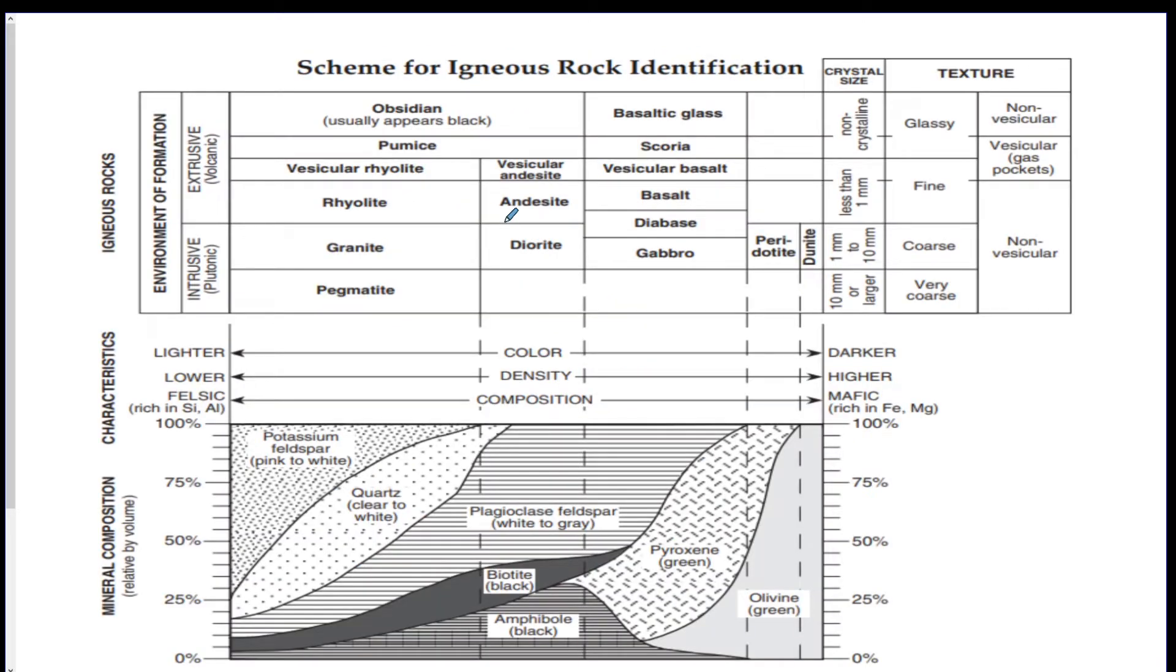The next chart is the igneous rock chart. There is a lot of information on this that you can get out of it to not have to memorize any information about igneous rocks. So I'm just going to go through it quick. All the rock names are in the middle. They're in bold. The environment of formation is on the left.